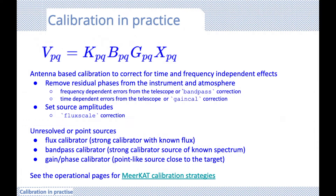When we apply the calibration solutions, we do so in order. You solve for each Jones matrix starting on the left and working to the right: start with K (delay), followed by B (bandpass), and lastly G (gain). As each solution is calculated, it is temporarily applied to the calibrator observed data to correct for that distortion before calculating the next Jones matrix. CASA's commands perform this kind of temporary application inherently, and we'll point that out as we go along.